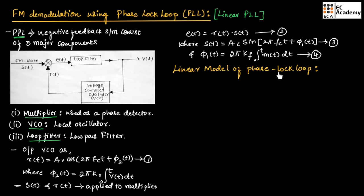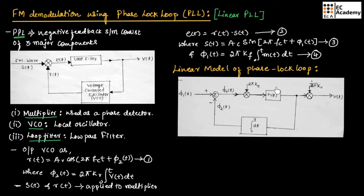Now let us understand the linear model of phase lock loop. Here φ1(t) is the phase of the input signal and φ2(t) is the phase of the feedback signal. If we take the difference between φ1(t) and φ2(t), we obtain the phase error φE(t). This phase error should be equal to 0 in the phase lock condition, which means the phase of the input signal and the phase of the feedback signal should be the same.